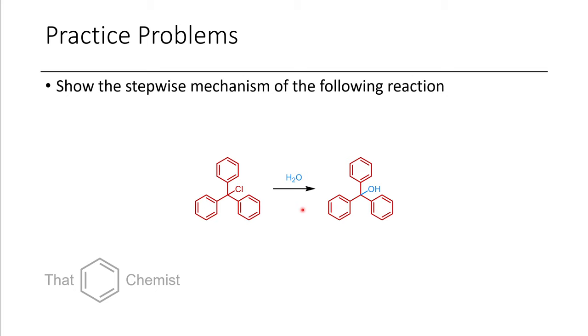A second problem is show the stepwise mechanism of the following reaction. So here we have what is called trityl chloride, and we're treating it with water and somehow we form triphenyl carbinol. And so work through the stepwise mechanism. And if you can say whether this is an SN1, an SN2, an E1 or an E2 reaction, that would also be good.